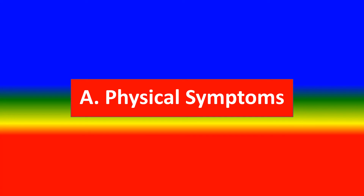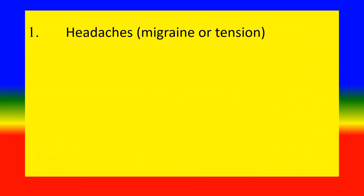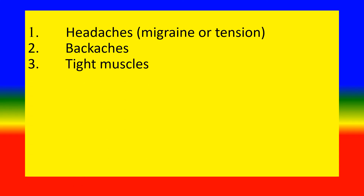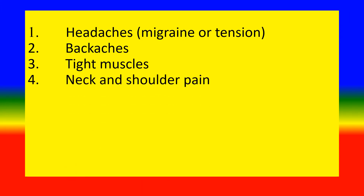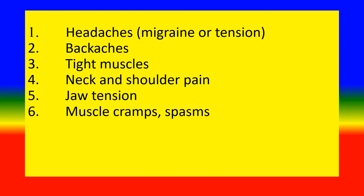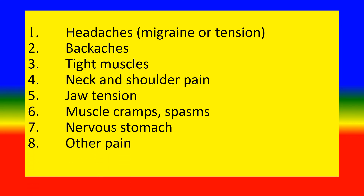A. Physical Symptoms. 1. Headache — Migraine or Tension. 2. Backache. 3. Tight Muscles. 4. Neck and shoulder pain. 5. Jaw Tension. 6. Muscle Cramps. 7. Nervous Stomach. 8. Ulcer Pain.